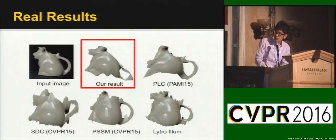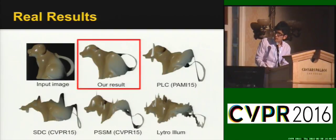This is a real example taken with the Lytro Illum camera. We can see that previous methods will generate artifacts around the most specular regions, while our method can realistically recover the shape. This is another example, showing that previous methods will fail at specular regions.